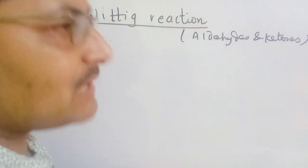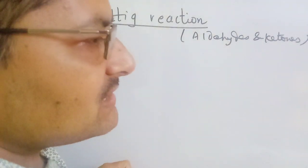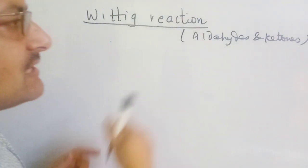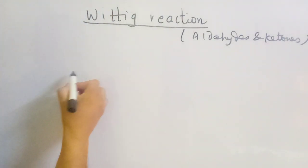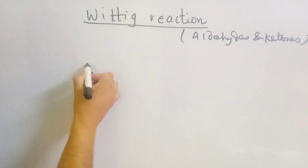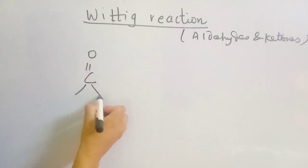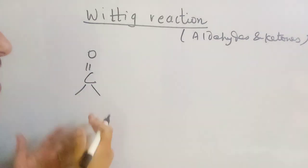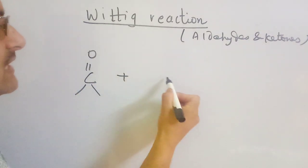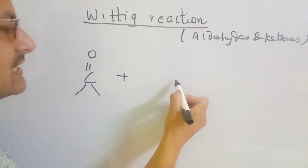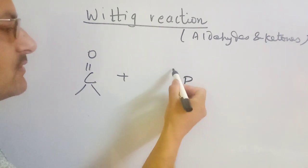I will introduce you to the Wittig Reaction. The Wittig Reaction involves a carbon compound. It is a carbon-phosphorus compound — a phosphorus ylide compound.